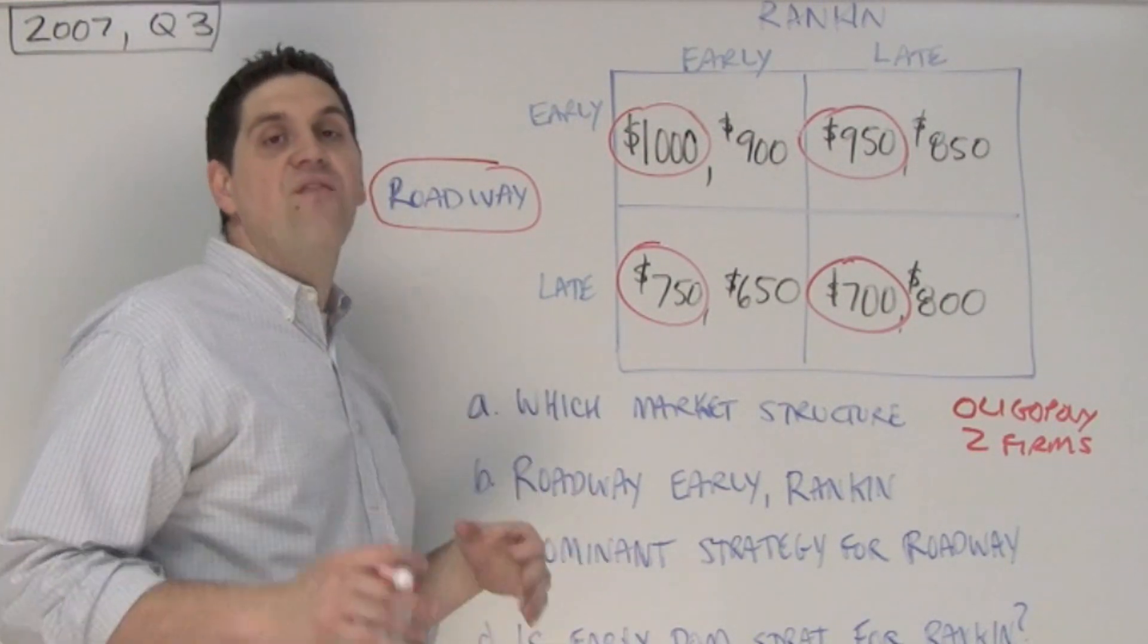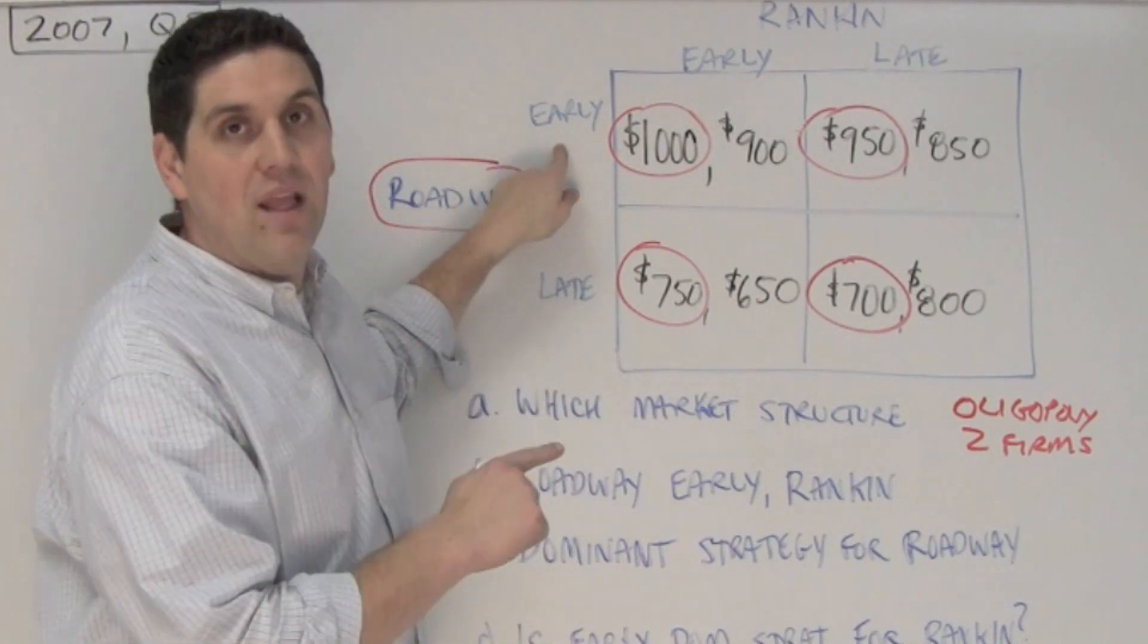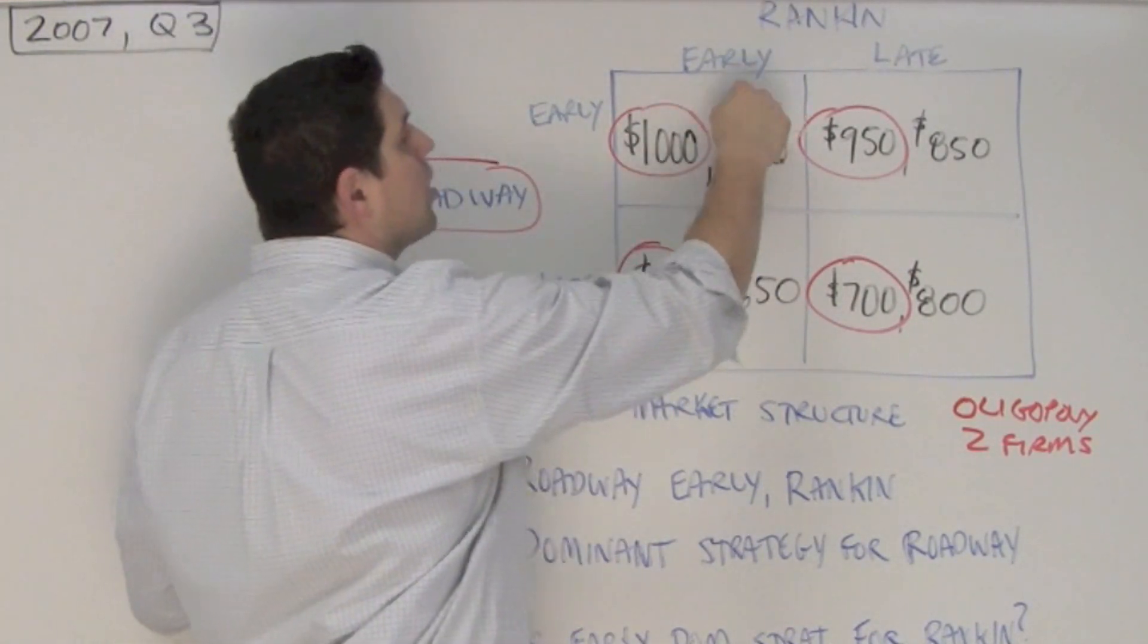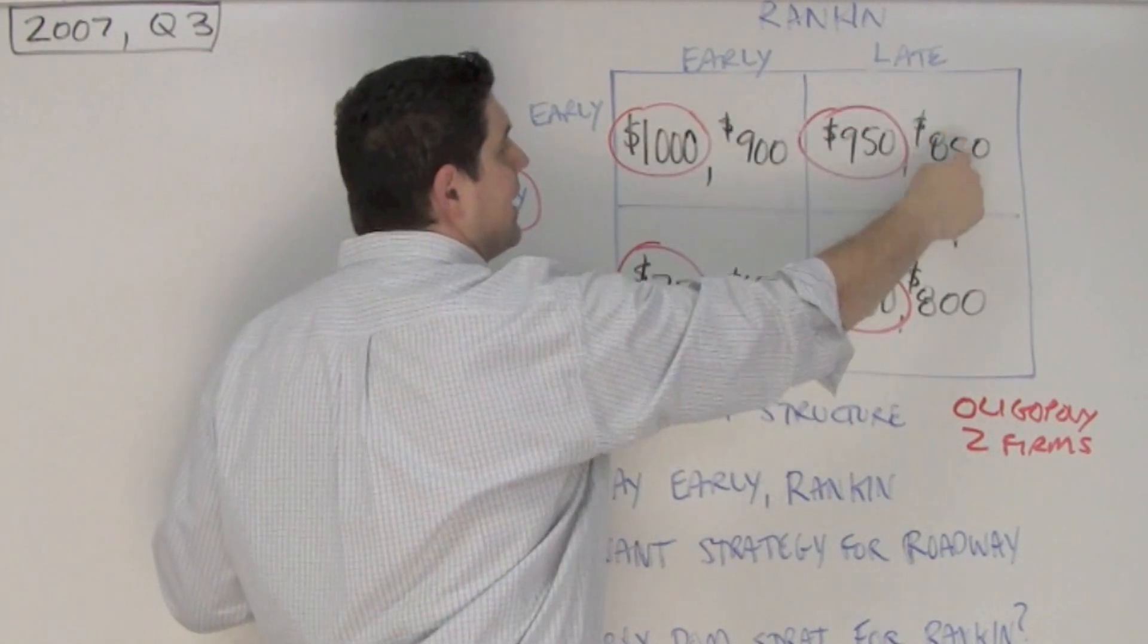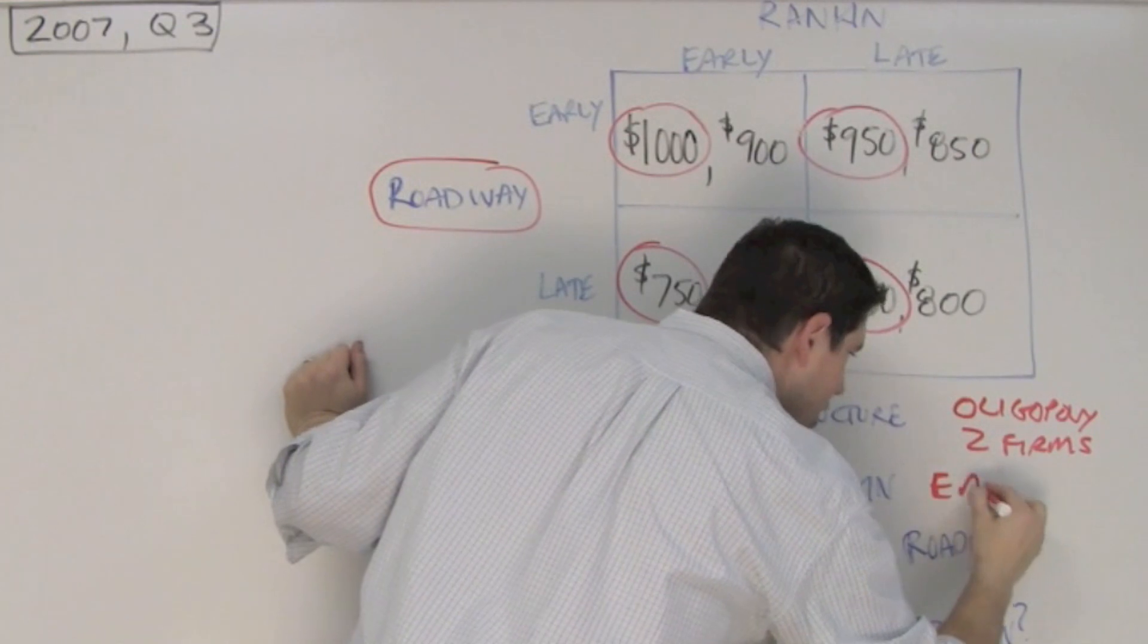Now in B, it's verifying you understand how to read the chart. It's saying if Roadway goes early, what's better for Rankin to do? Either go early or go late. Well, Roadway goes early. Rankin either can go early, get 900, or then go late and get 850. Well, Rankin would rather go early. And so the answer is early.